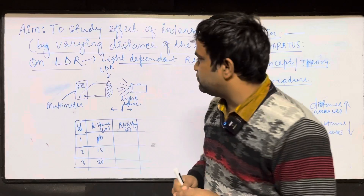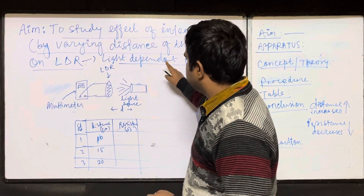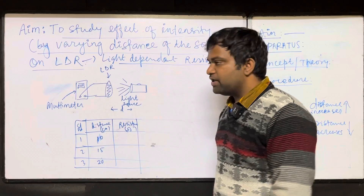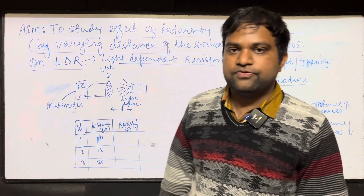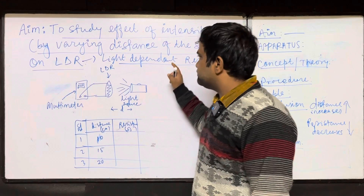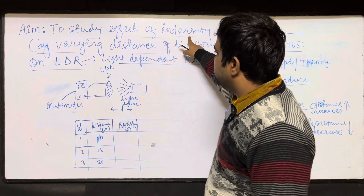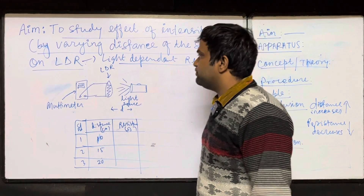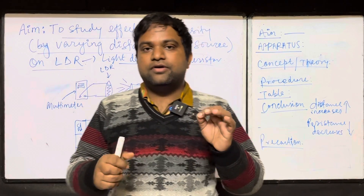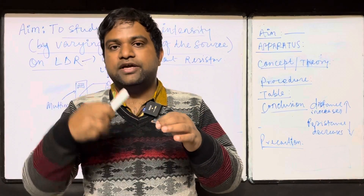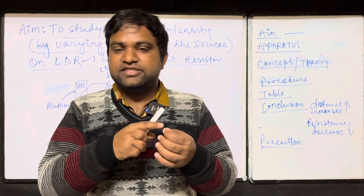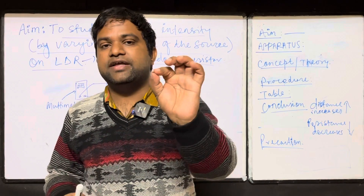So 6 activities you have to do. This one is from Section B — I have already uploaded a few activities. This one is to study the effect of intensity. We will study how, if we put some light on the LDR, how the intensity of that light is changing the resistance of this LDR.